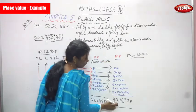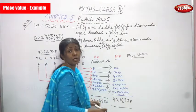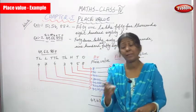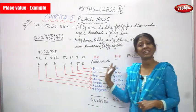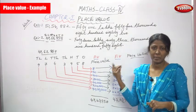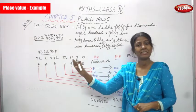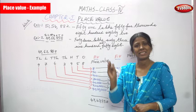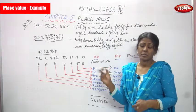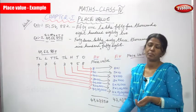Finally, put commas properly and read and write the number correctly. Before reading or writing the number, always write the place value chart — ones, tens, hundreds, thousands, ten-thousands, lakhs, and ten-lakhs — according to the number. Only then can you read and write the number properly.